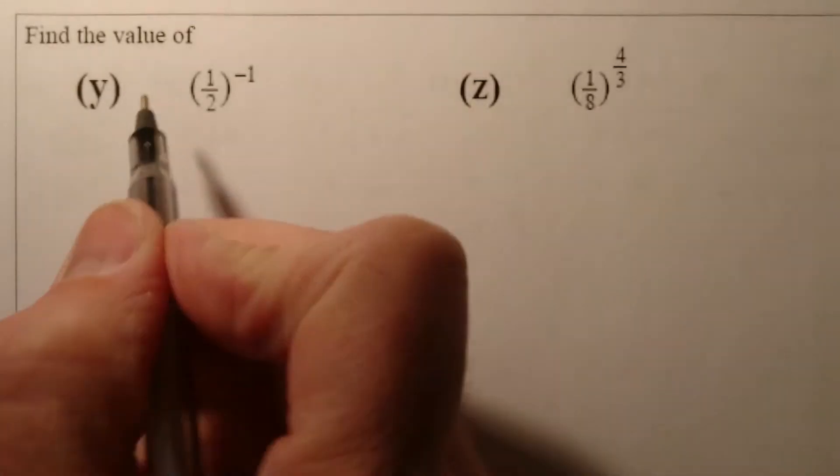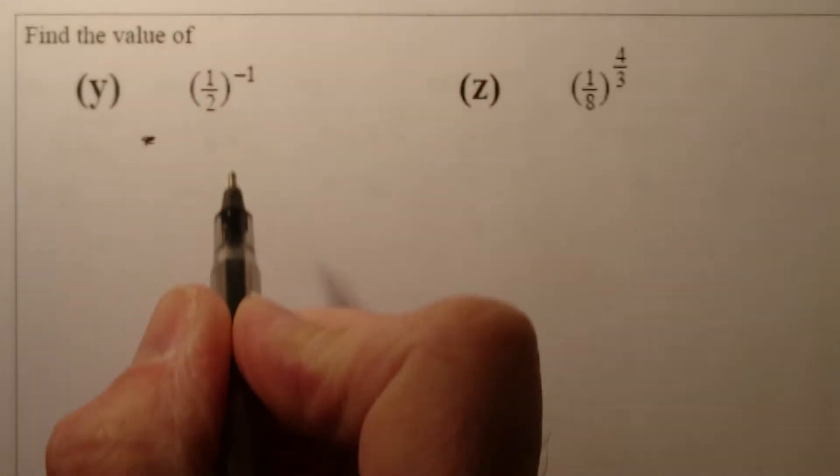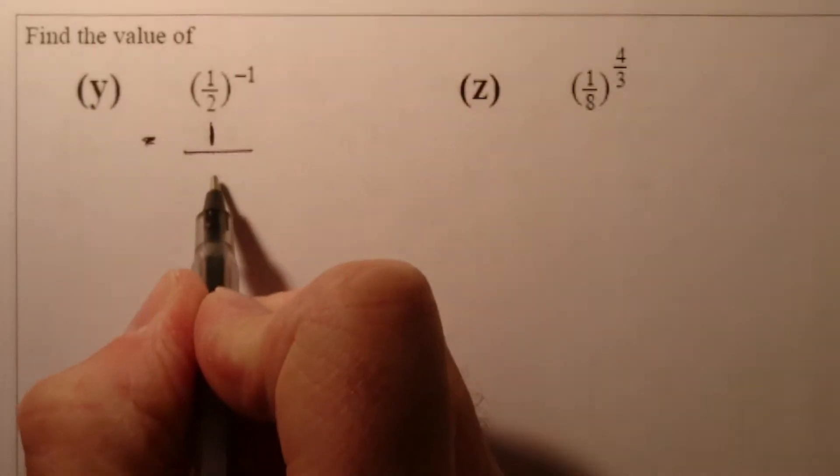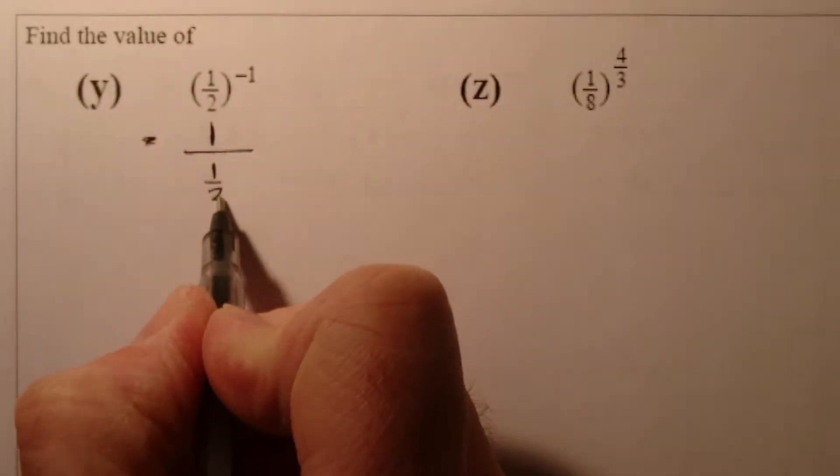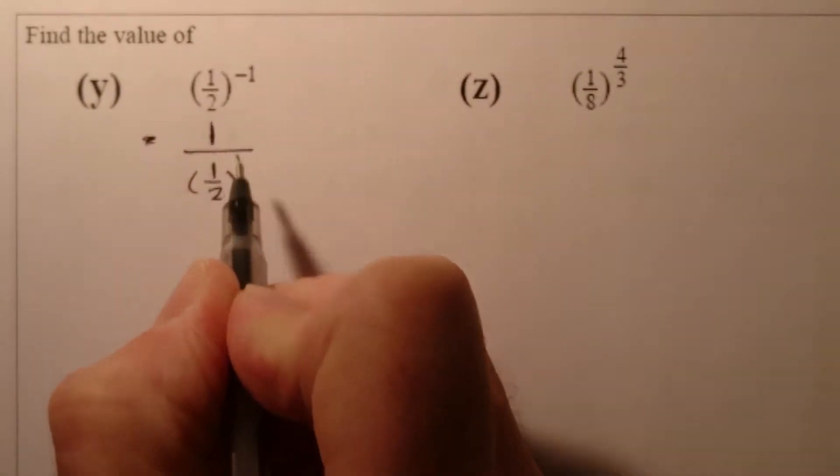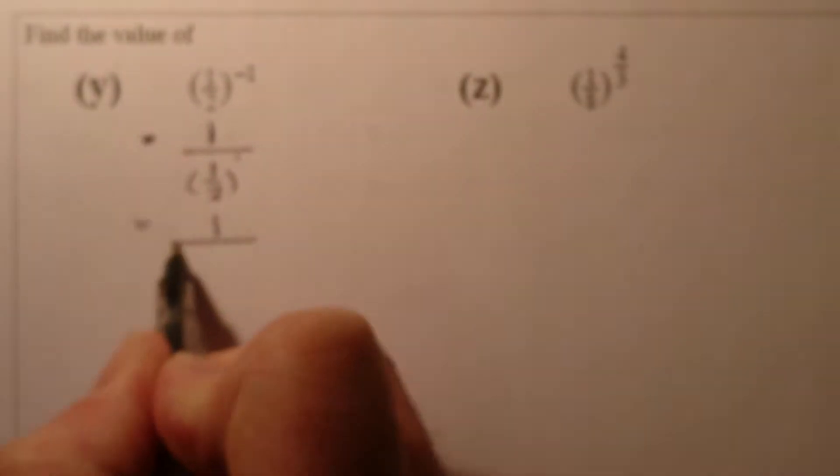What we're going to do is whatever's inside this bracket, I'm going to put down to the denominator. So what we have is one on the top, and then whatever's in the bracket, one upon two, and we'll put that to the power of one.